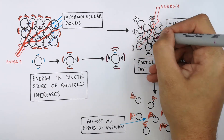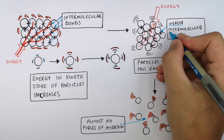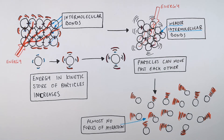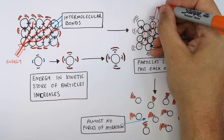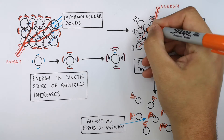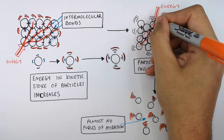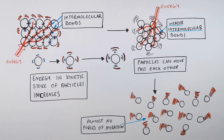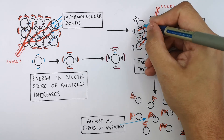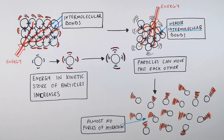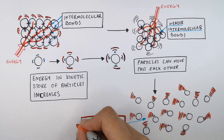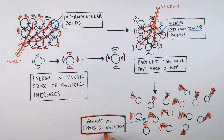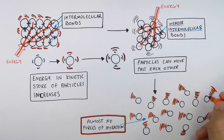So that means in a liquid there are going to be weaker intermolecular bonds between the particles. And if you then transfer more energy into the kinetic energy store of the particles, increasing the internal energy of the system, you're going to break the remaining intermolecular bonds. The particles will now have almost no forces of attraction between them and they're going to be in a gaseous state, where the particles are moving at their fastest.